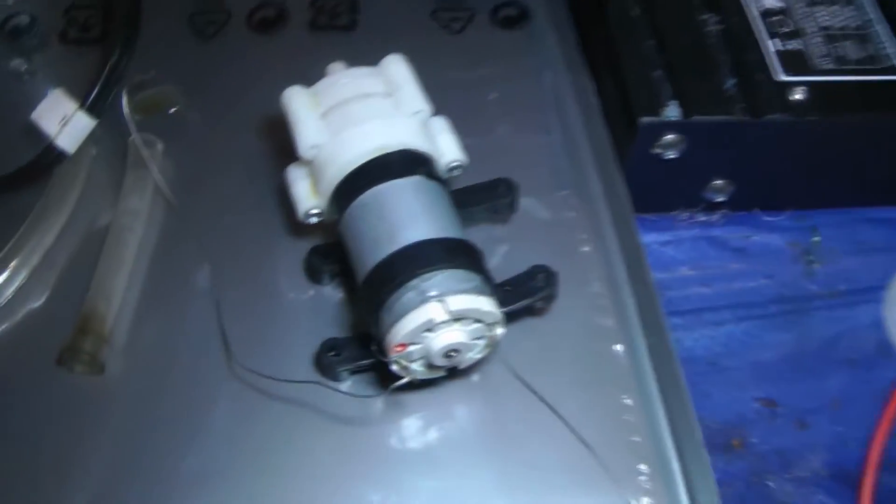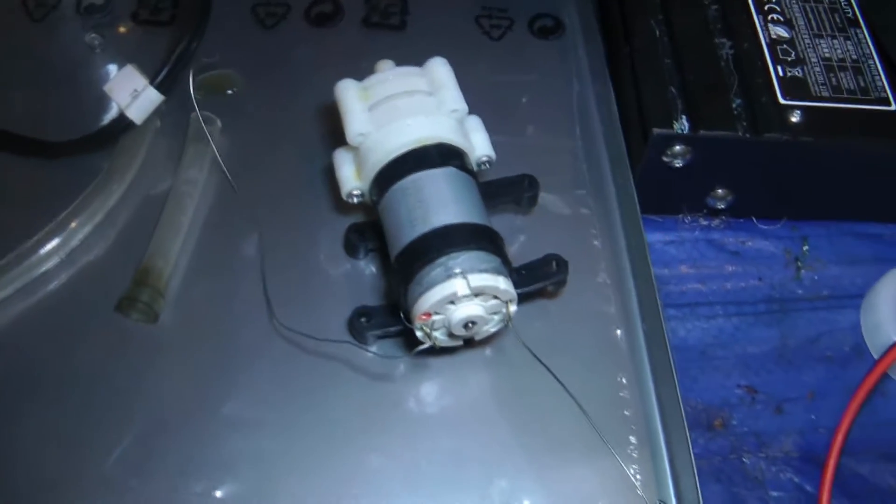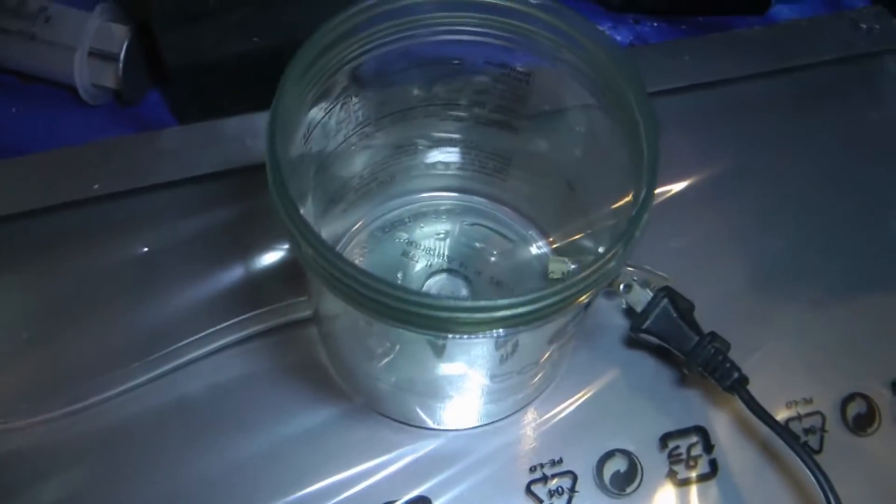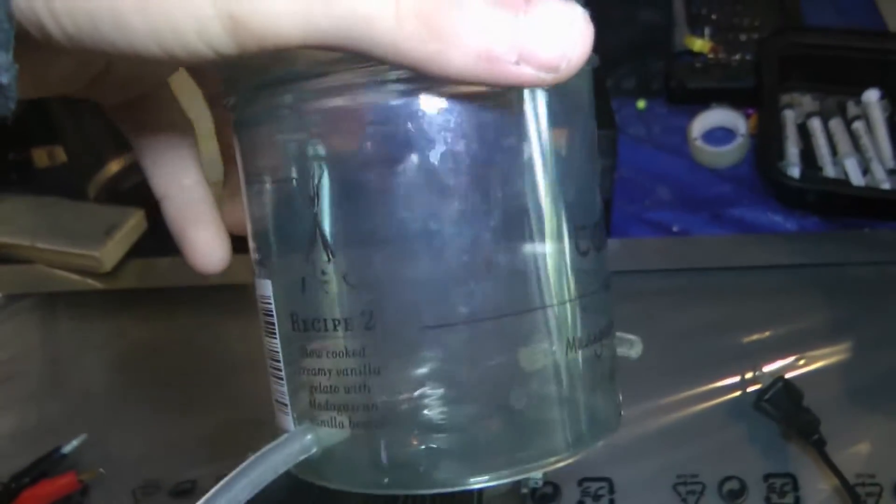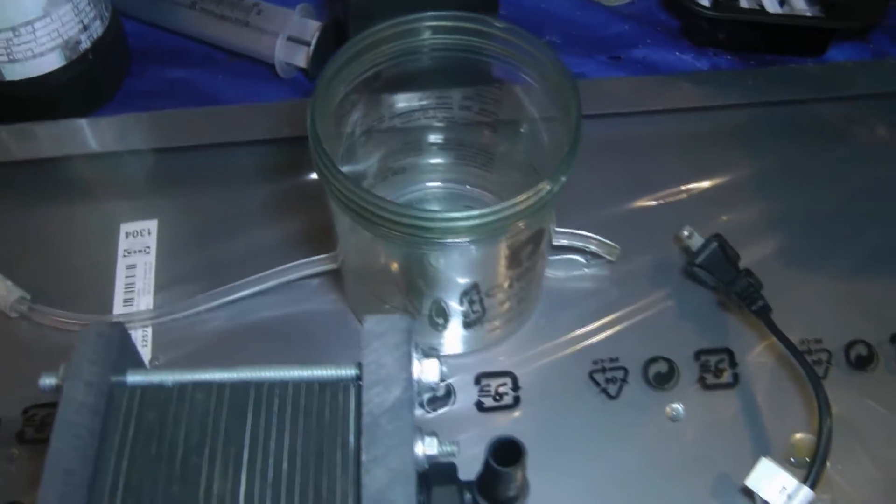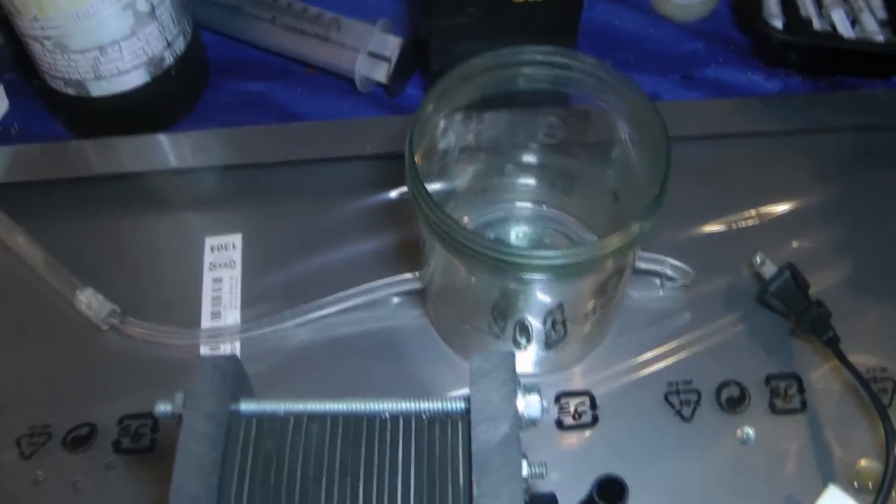Now we have our circulation pump right here. This is like $3. I also got this off eBay. And this is going to be our reservoir. Of course this is very temporary. I just threw it together really quick because I wanted to make some hydrogen.